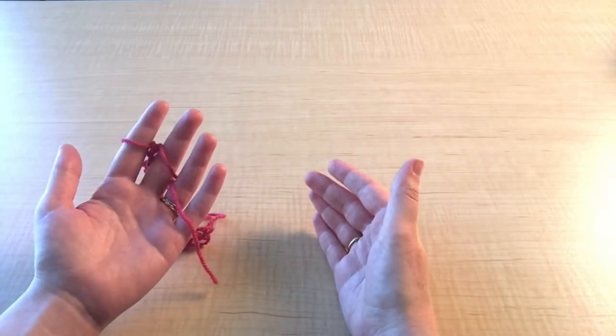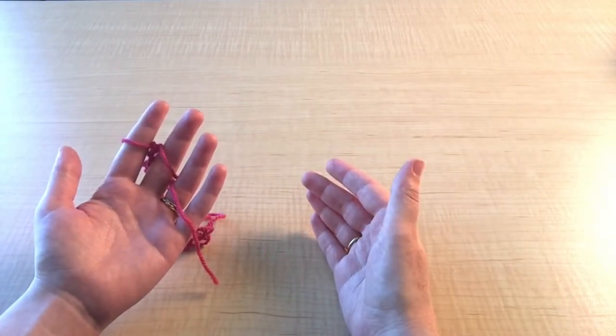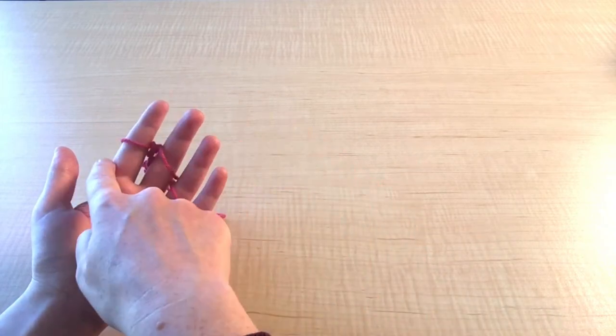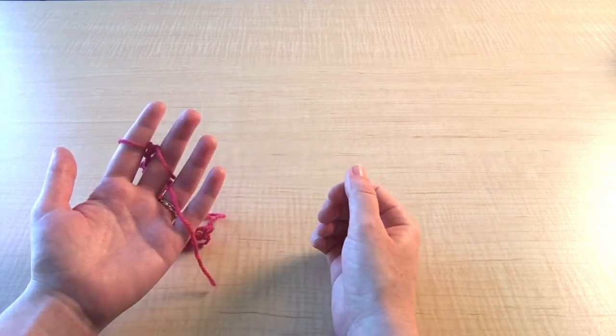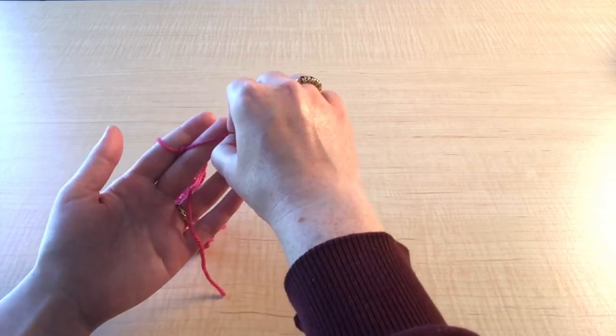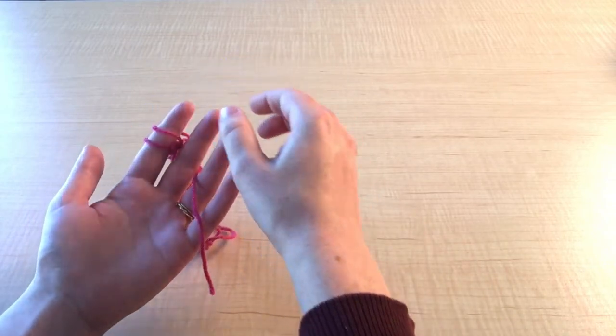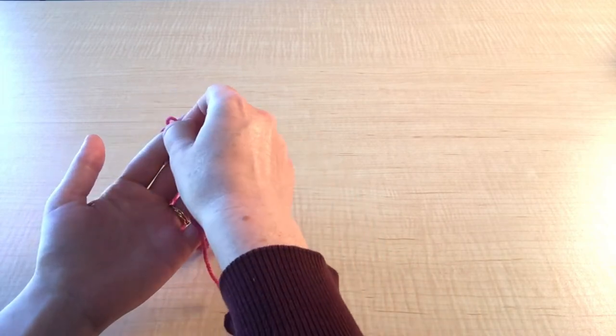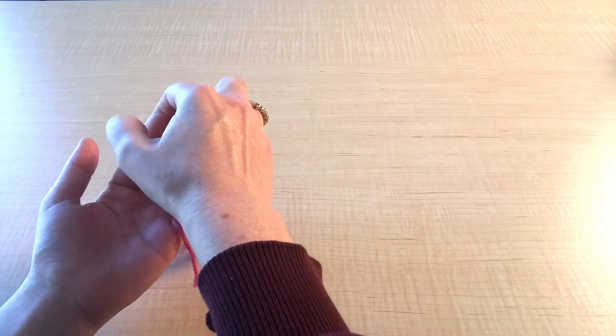Once we have the length that we want, it's time to bind off our stitches. To do this, make sure there's only one loop of yarn on each finger. Take the loop on your middle finger and place it onto your pointer finger. Now pull the bottom loop up and over the top loop and off your finger.